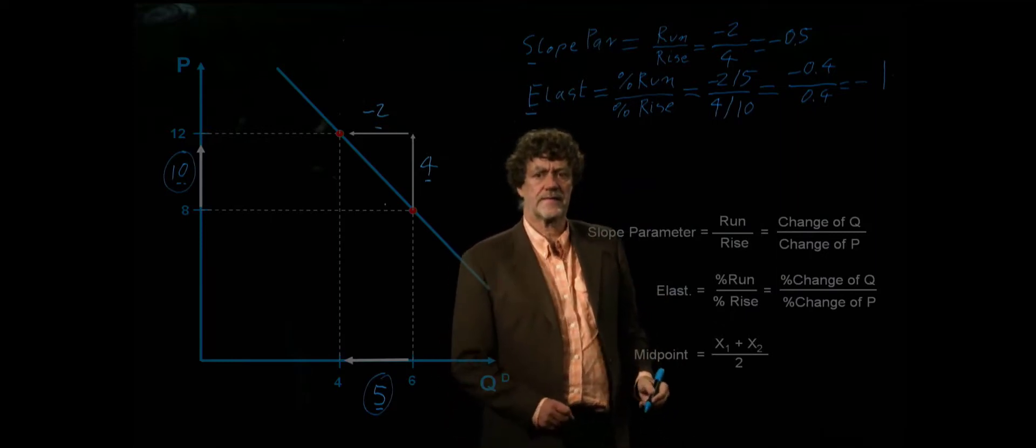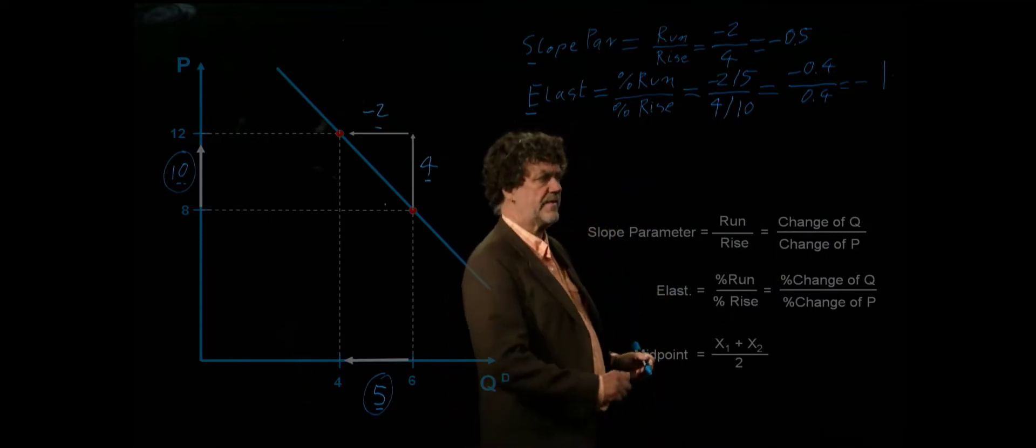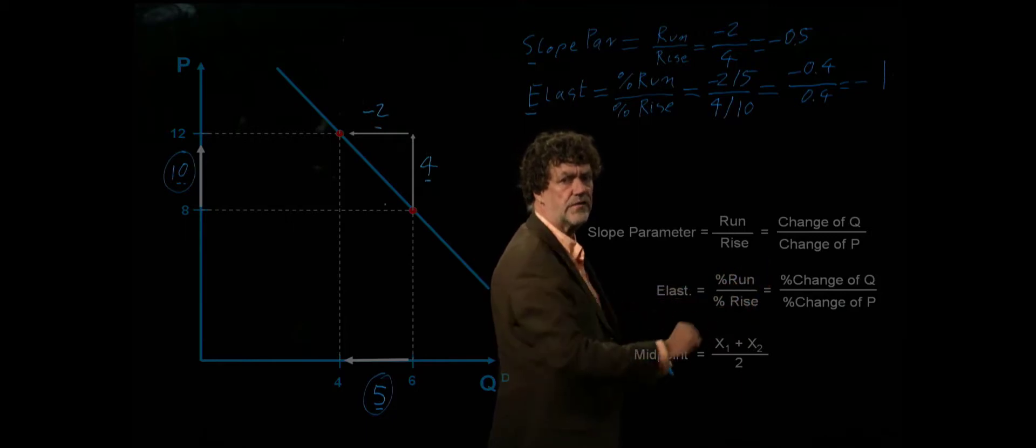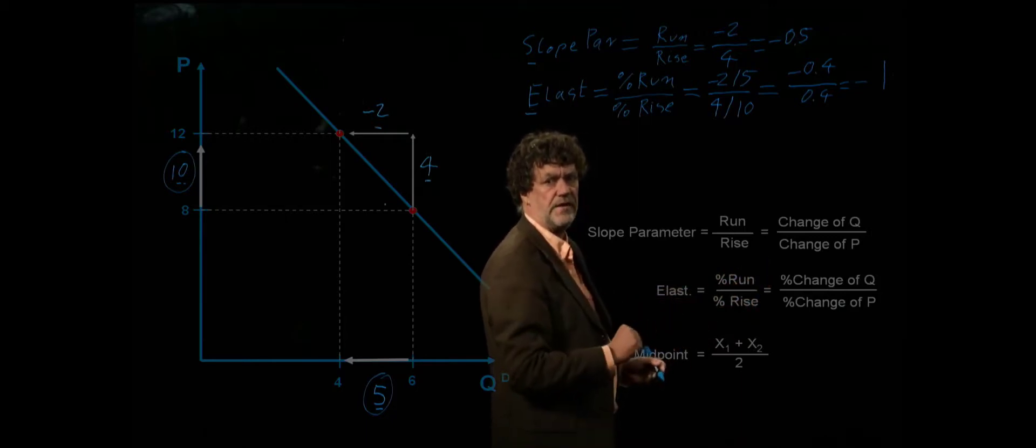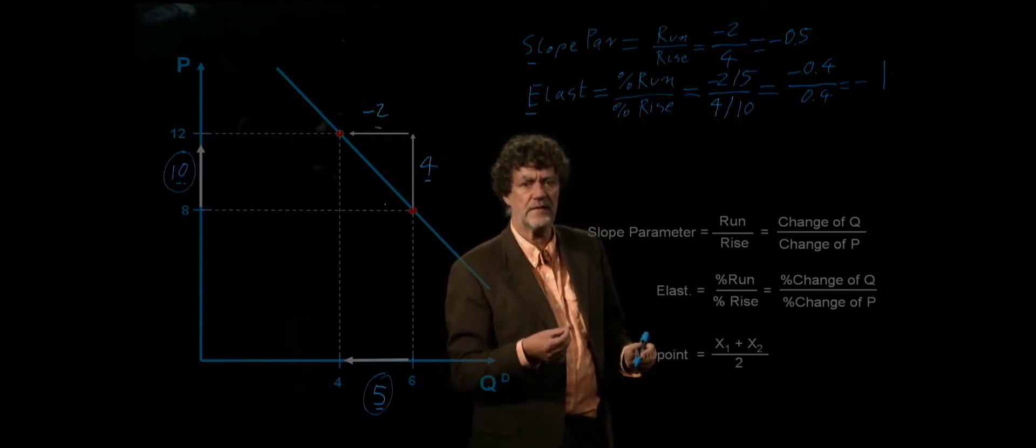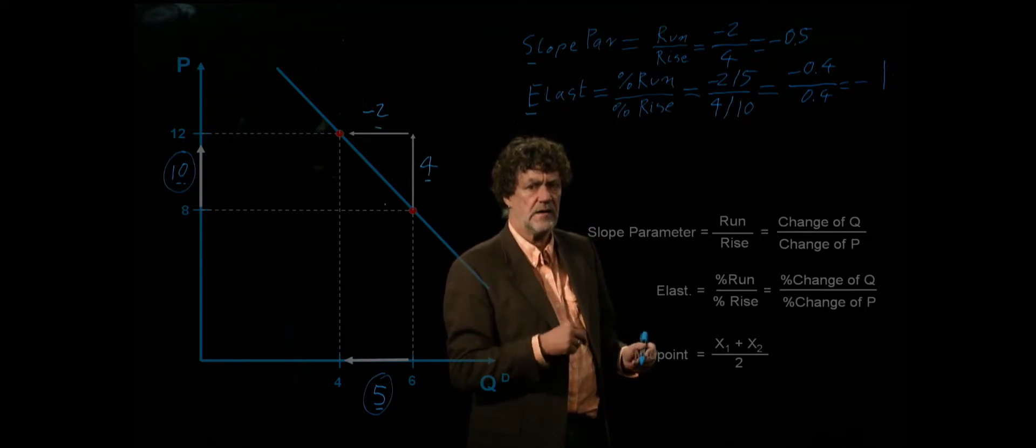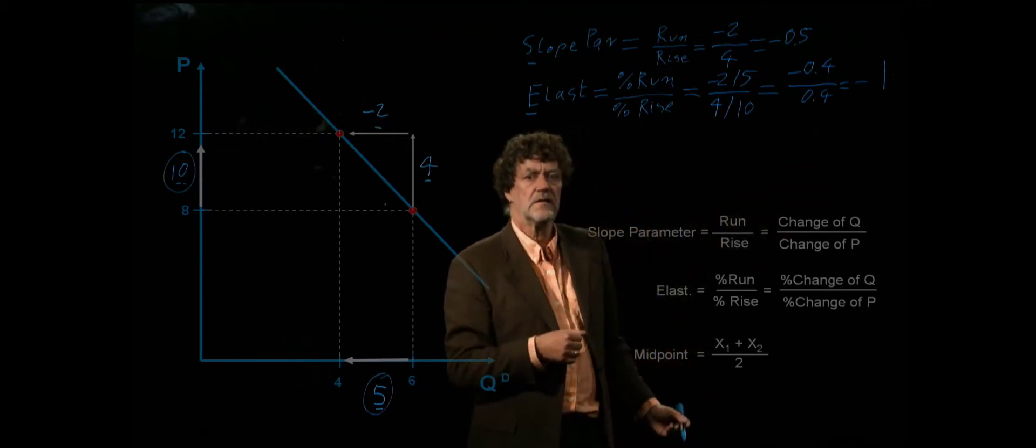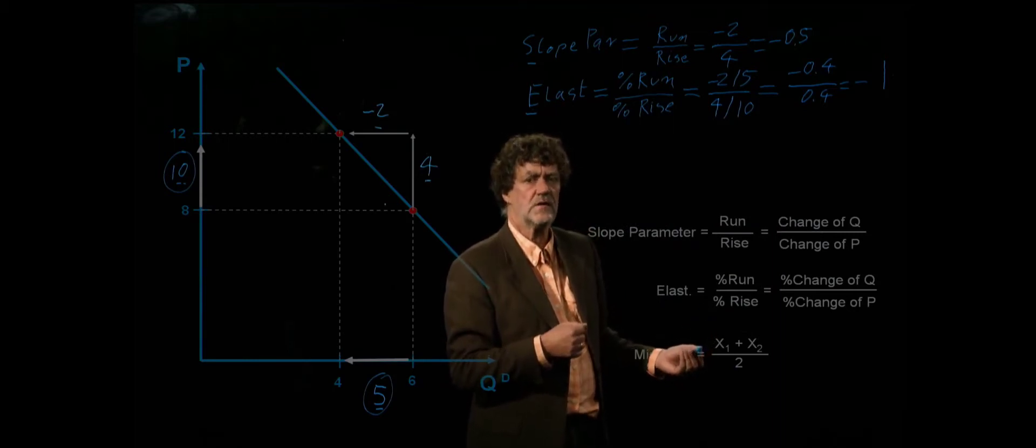It means if the price changes by 1%, the quantity demanded will decrease also by 1%. So for every percentage change of price of 1%, the quantity demanded will also change by 1%. If the price changes 2%, then because we have a 1 here, the quantity change would be the same. The quantity would decrease by 2%.